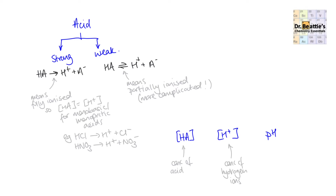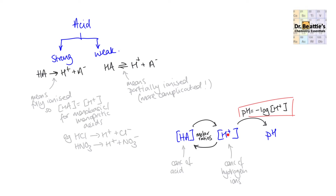We outlined the relationship between the concentration of the acid HA originally put in solution for a strong acid, and how that affects the concentration of the hydrogen ions. For strong acids, we look at the molar ratios from the left-hand side to the right-hand side of the equation. For monoprotic acids it's simplest, because the concentration of HA will be exactly the same as H⁺. The key equation is pH equals minus log of H⁺ concentration.